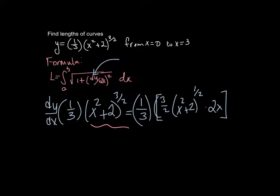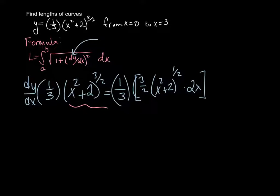And so from here, I can make this look a little bit better because that 2 and that 2 is going to cancel. That 3 and that 3 is going to cancel. So I simply end up with, don't lose that x there, x times x squared plus 2 to the 1/2 power.